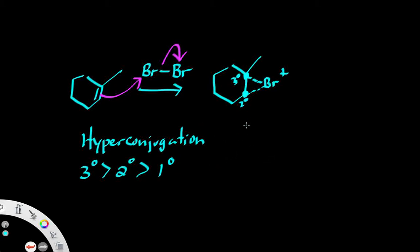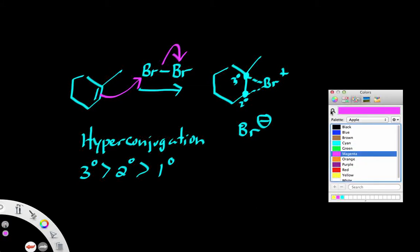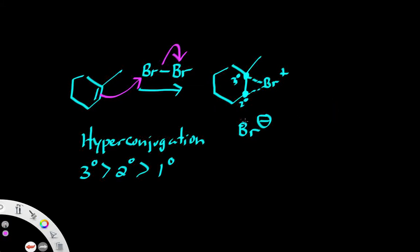So now let's talk about how Br⁻ is still floating around in solution or a bromide ion, and this is going to serve as the second nucleophilic attack on this tertiary carbon, and when it does that this bridge species breaks apart and opens.